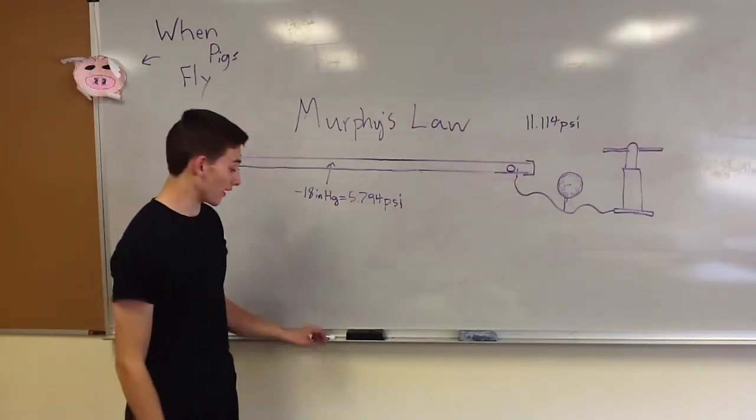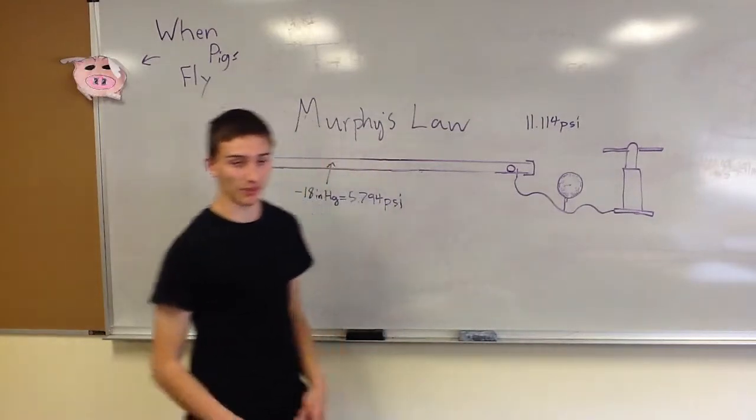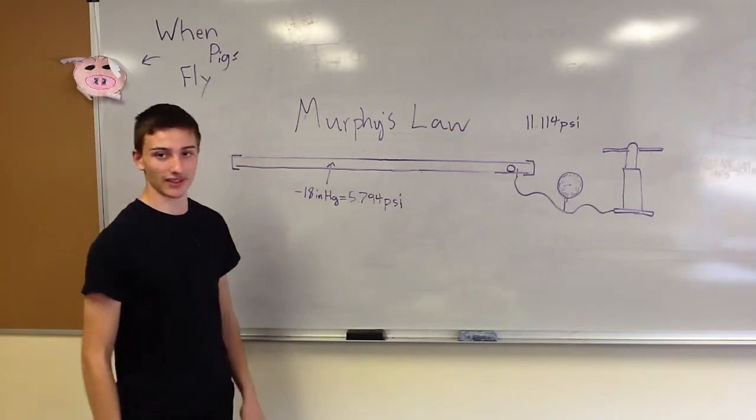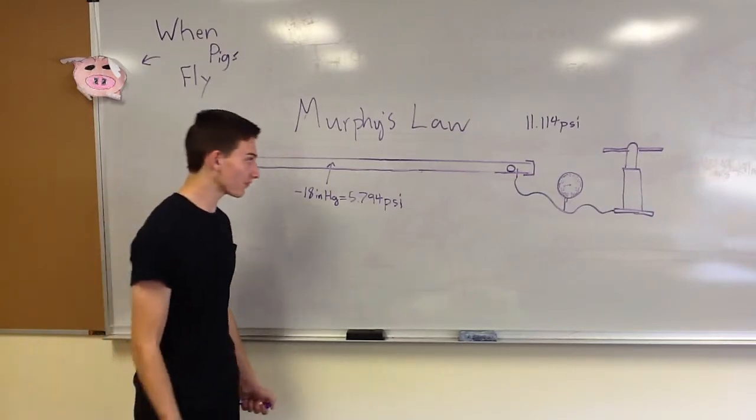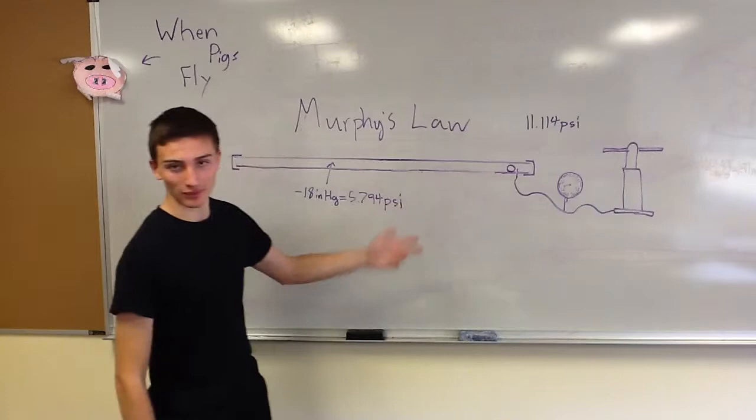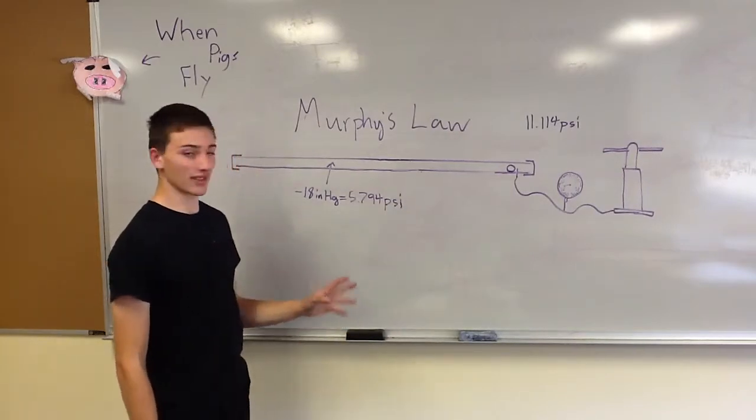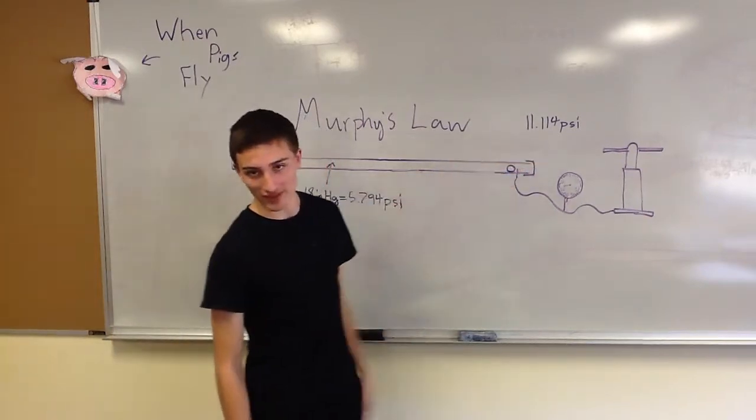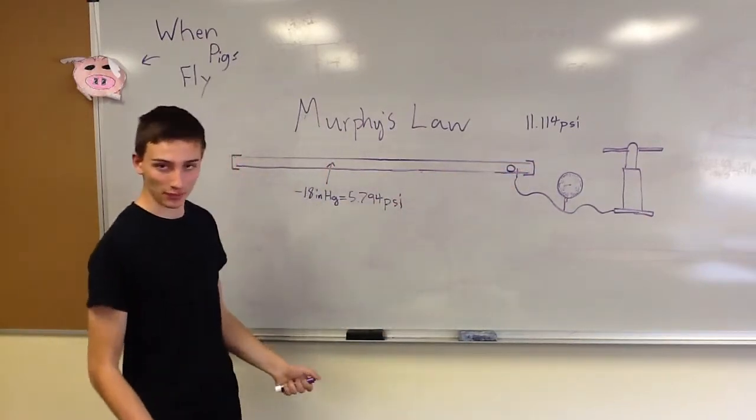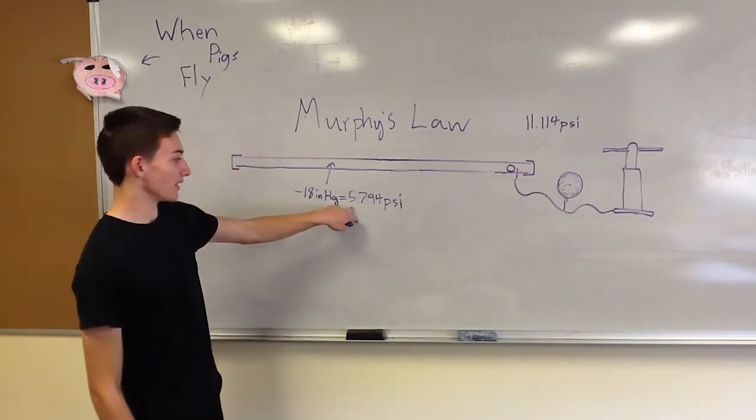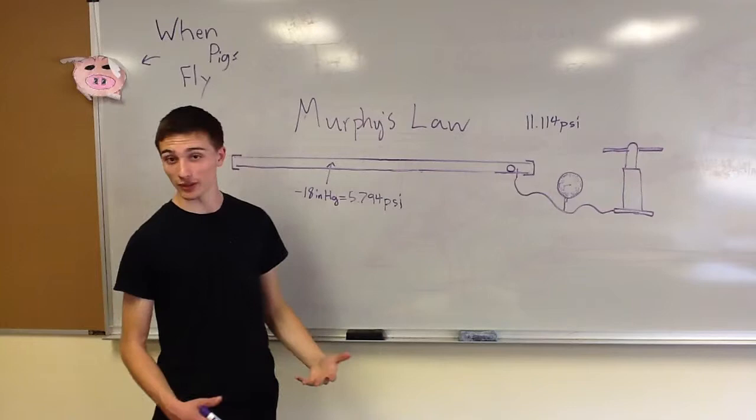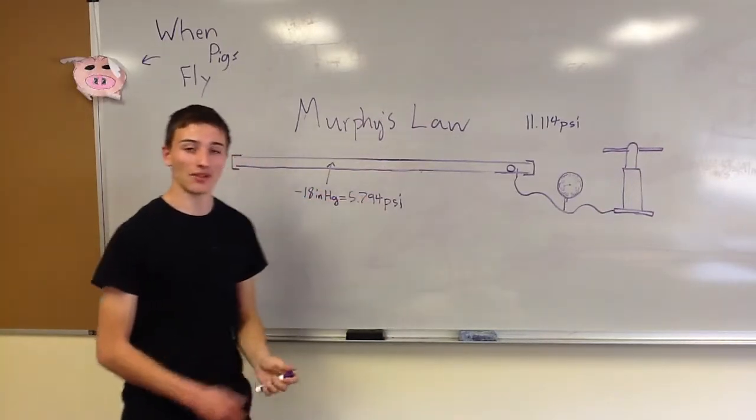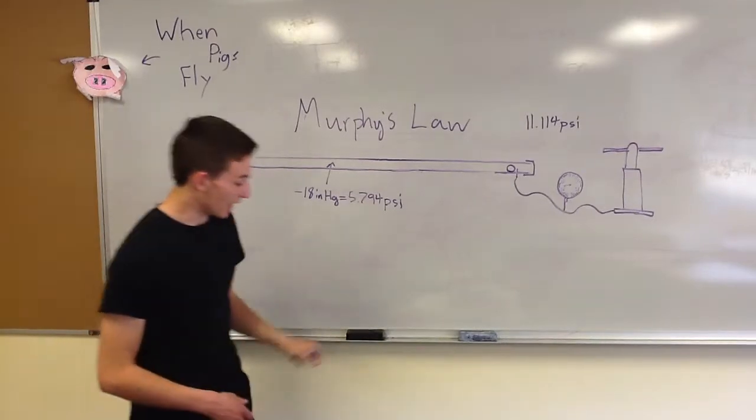And so what we do with our vacuum that we made, which we'll be explaining later, is we create a partial vacuum inside the chamber of the gun. We have both ends sealed, one with mylar, one with tape. And what this allows us to do is create a vacuum inside. And there's about 11.114 psi of pressure at the altitude that we're at. And we create about 5.794 psi on the inside of vacuum. So it goes from 11.114 to 5.794.